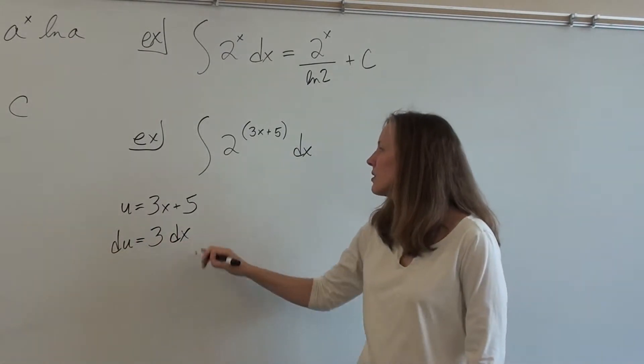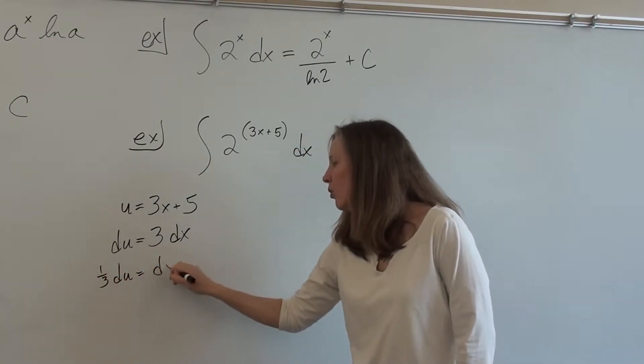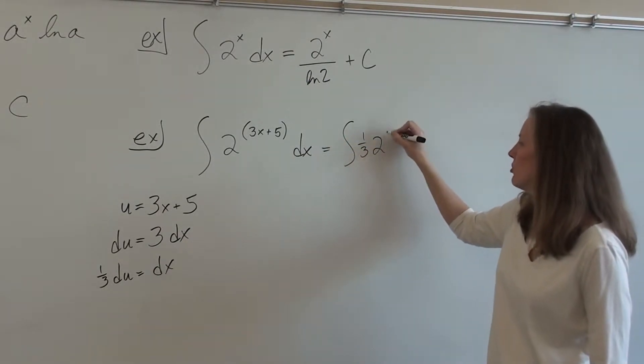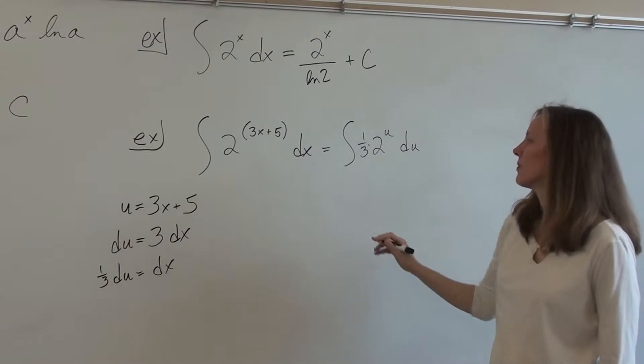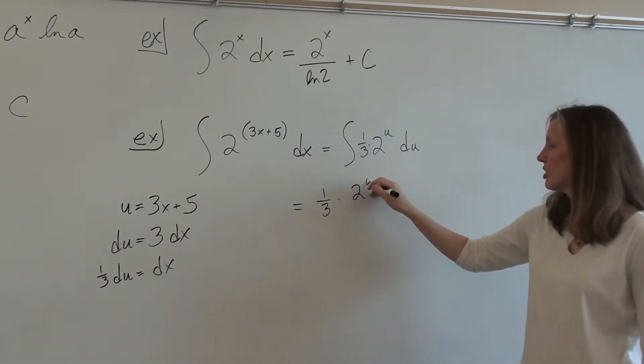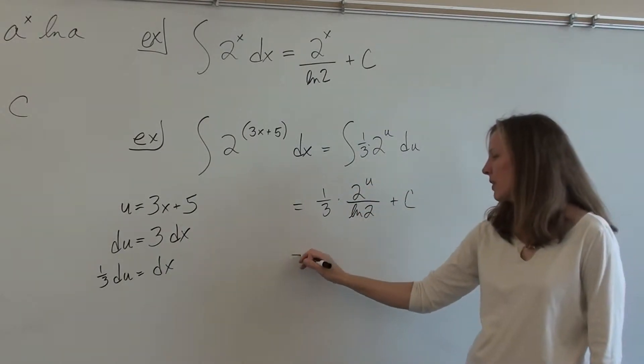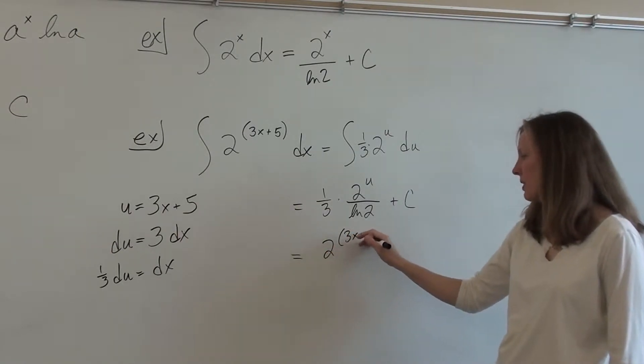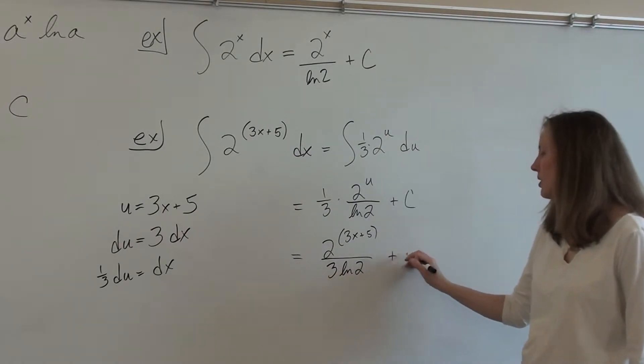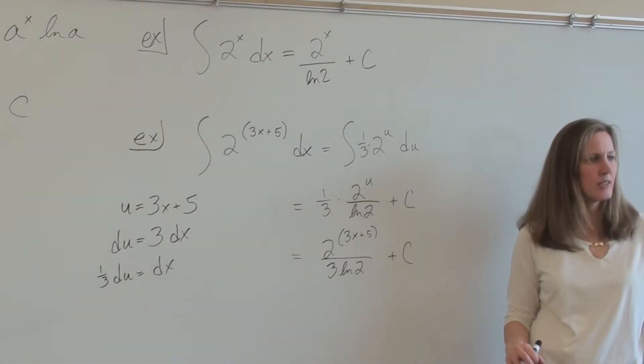So du is 3 dx. But we don't want a 3, so I'm going to divide out the 3. Oh yeah. So we get integral of 1 third times 2 to the u, du. So we end up with 1 third times 2 to the u over ln 2 plus C. And then if you want to clean it up, you write 2 to the 3x plus 5 over 3 ln 2 plus C. Does that make sense? Any questions?